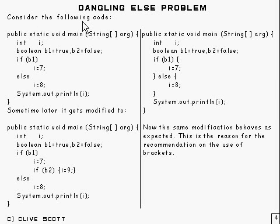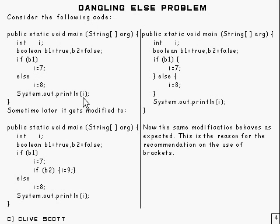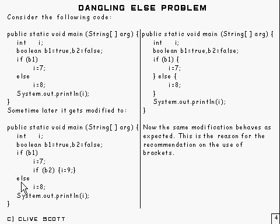This is the reason for putting the brackets in — it's something called the dangling-else problem. If you take a look at the following piece of code, we've got a boolean B1 set to true. So if B1 is true, you execute i equals 7 and then it prints it out, so 7 will be printed. Now supposing sometime later someone comes along and modifies it to put in an extra line: if B2, i equals 9. Now B2 is false, so i equals 9 is not going to be executed. But now what gets printed out is not 7 as before, but 8. That's because it's changed the meaning of this else — the else is now attached to the preceding if, not to the original one as it was before.